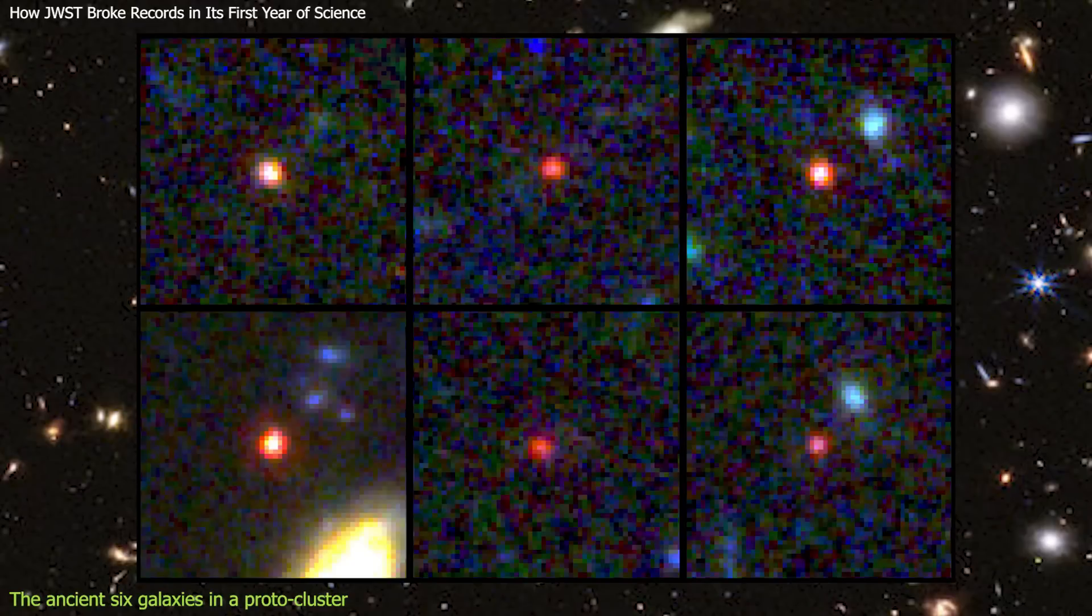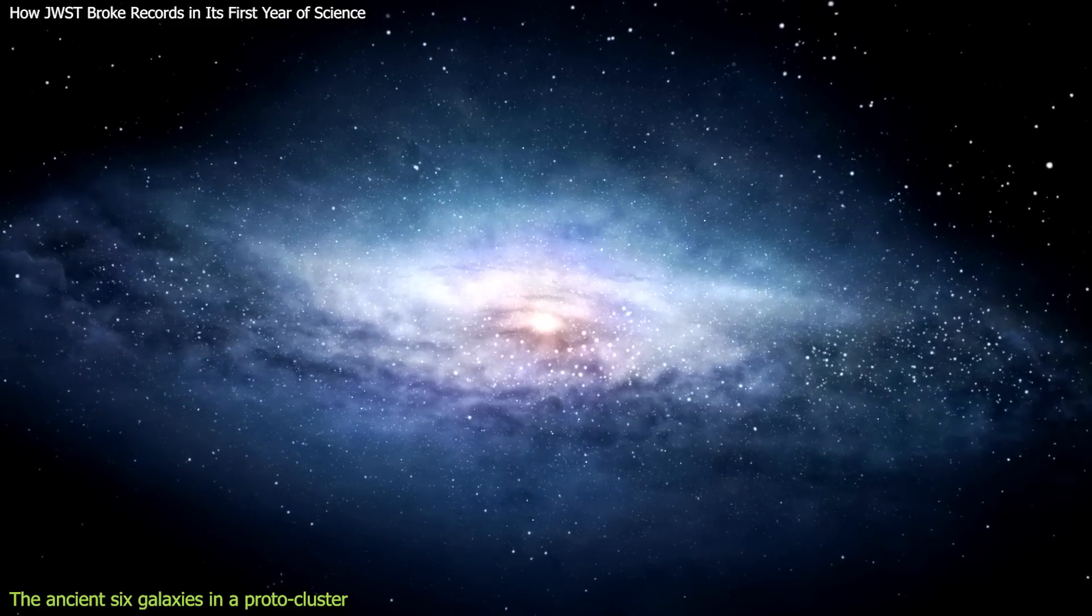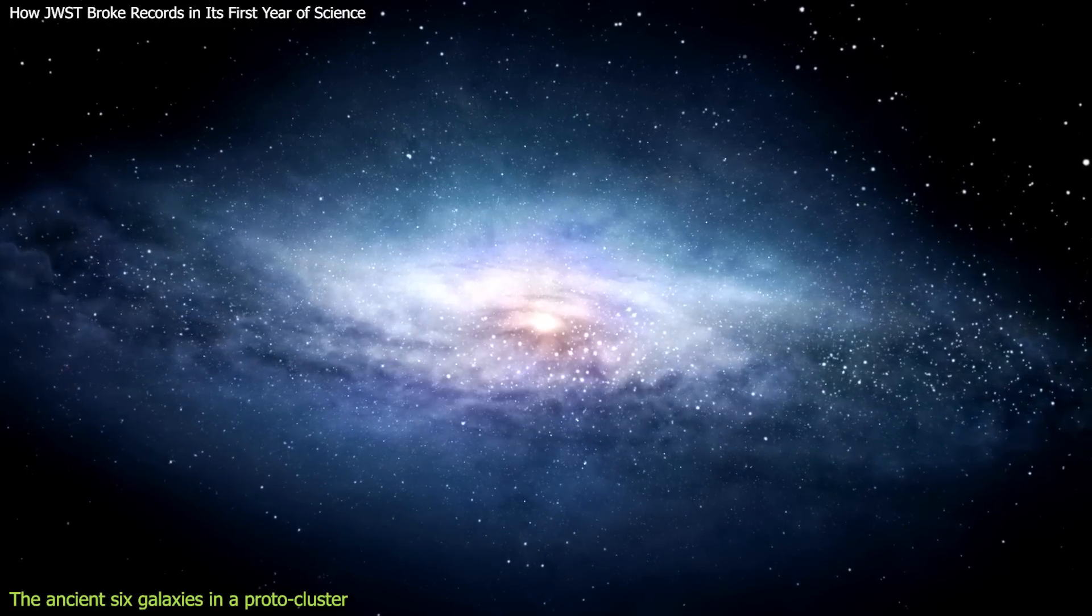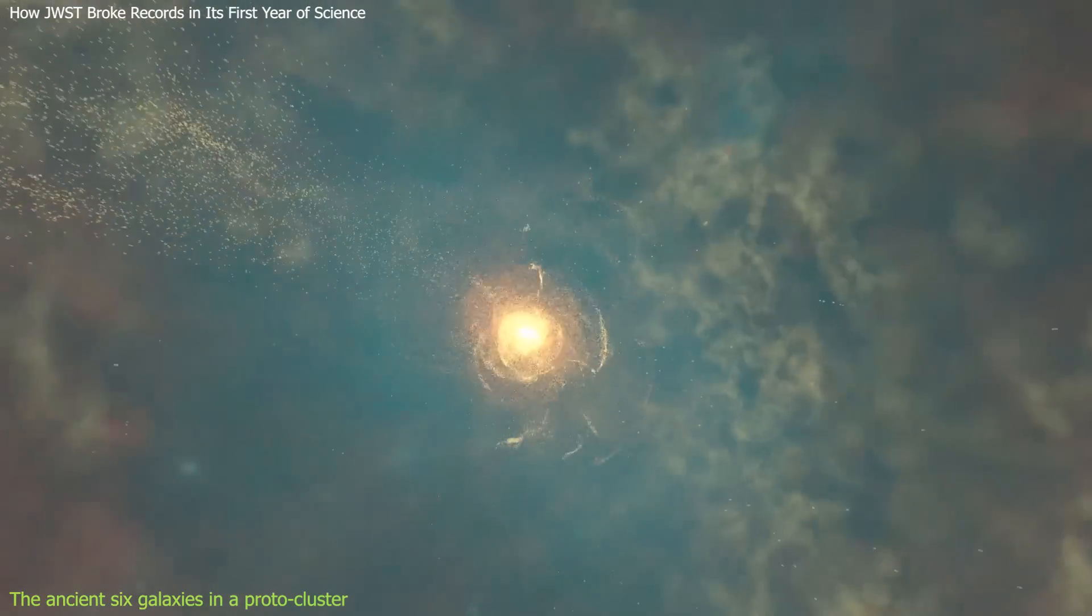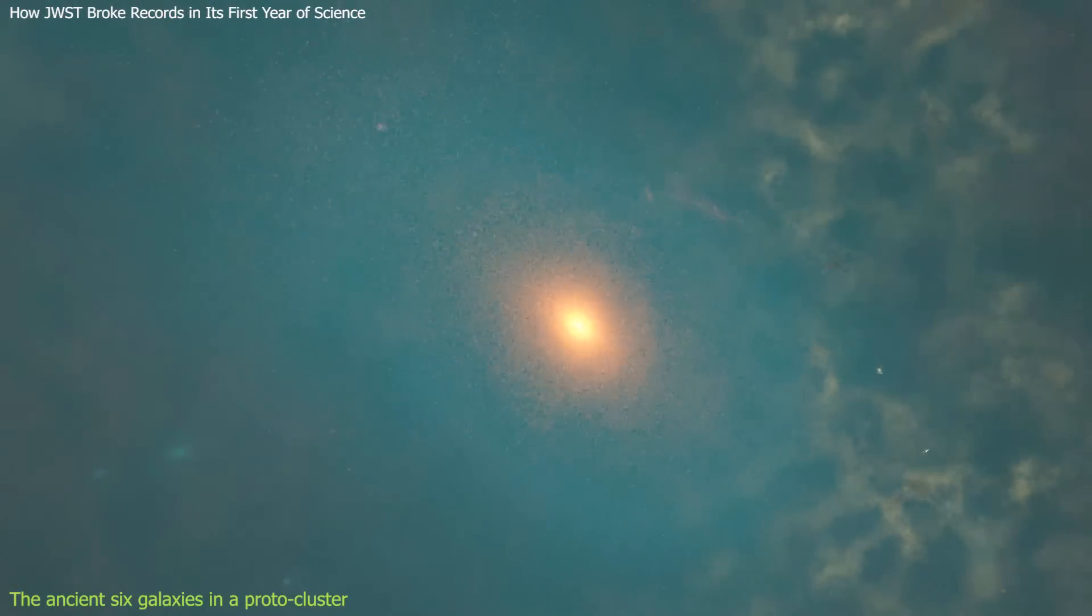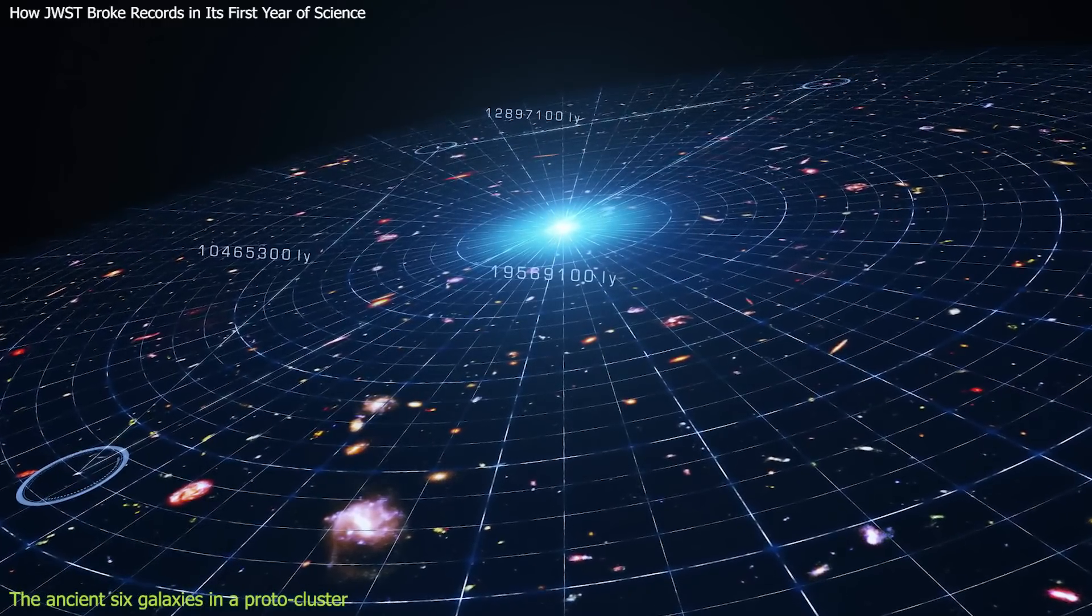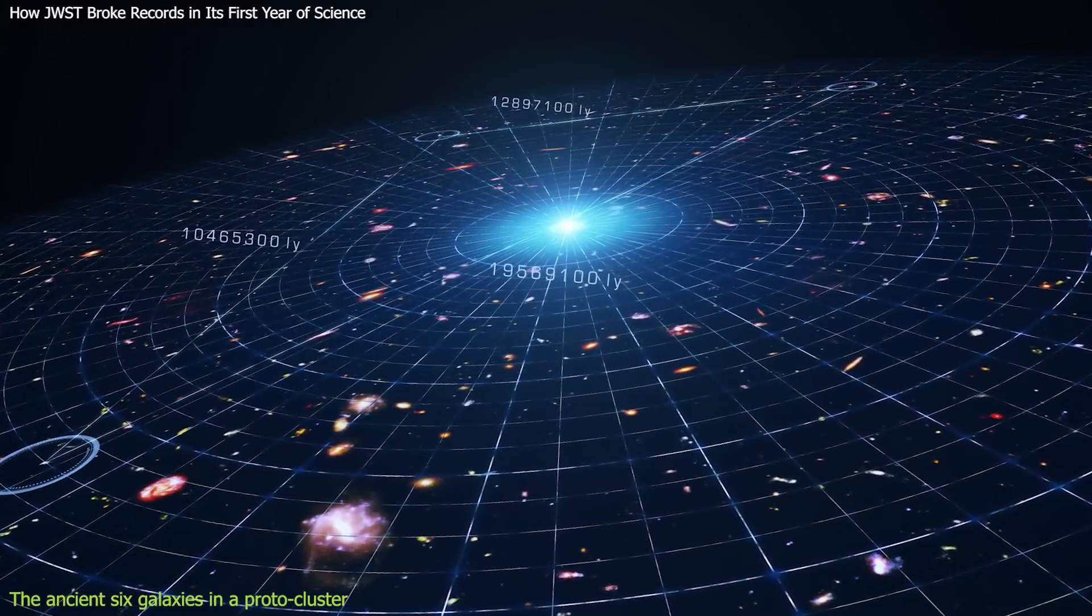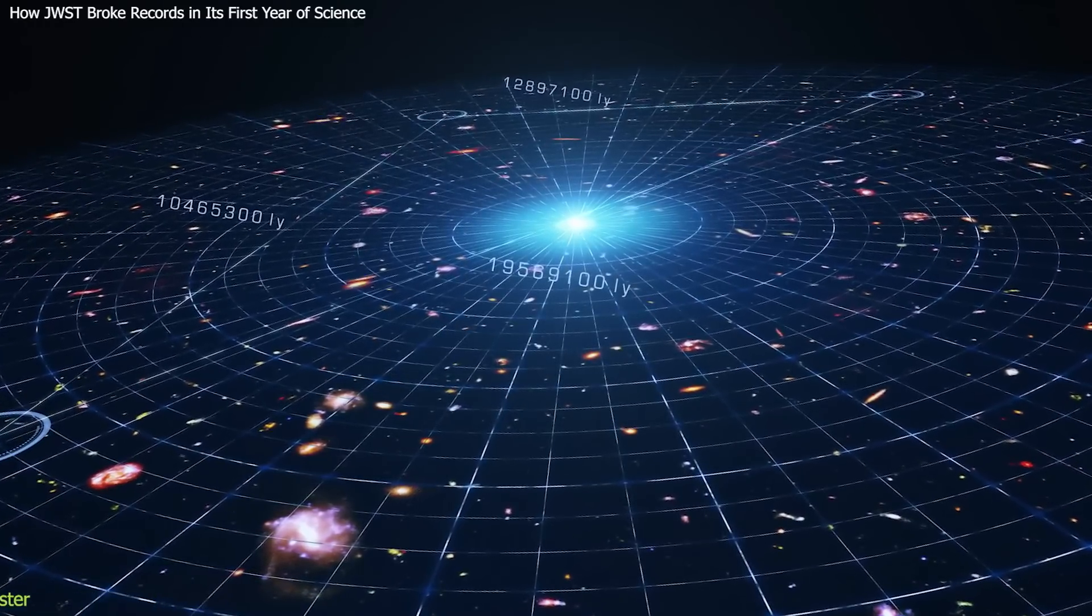This discovery reveals a new aspect of galaxy formation and evolution in the ancient universe. It shows that massive galaxies were already present when the universe was less than 10% of its current age. It also shows that these galaxies were not randomly distributed, but clustered together in regions of high density. This implies that these galaxies were influenced by their environment and by each other through gravitational interactions. James Webb Space Telescope will continue to observe these galaxies and other candidates for ancient protoclusters in the future, using its amazing ability to see deep into the past.